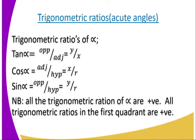Let us take an example. Alpha is in the first quadrant. When we take the opposite and adjacent of alpha, tan alpha is y divided by x, and these values are positive. Cos alpha is adjacent over hypotenuse, which is x over r. And sin alpha is opposite over hypotenuse, which is y over r. That is the reason why all the trigonometric ratios of alpha are positive in the first quadrant.